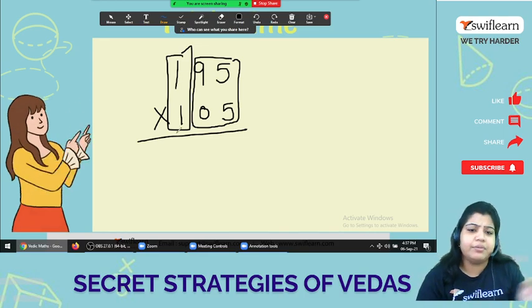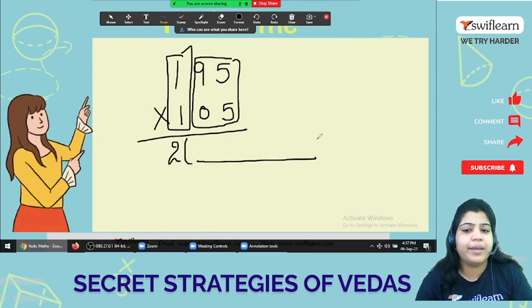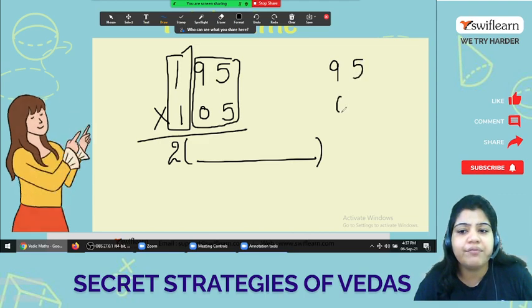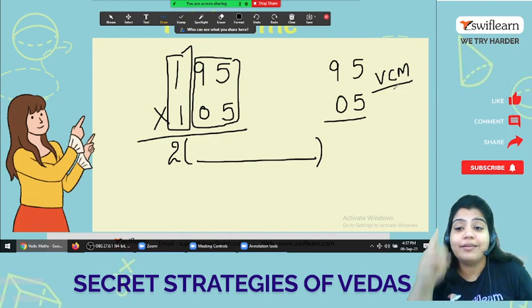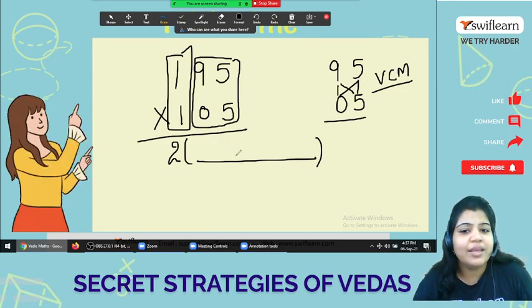Easy. So number and the next number, 1 times 2 is 2. But what about this second part? Here as you can see 95 and 5. I told you about VCM, that is bow tie method.